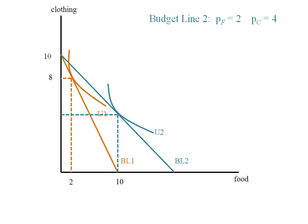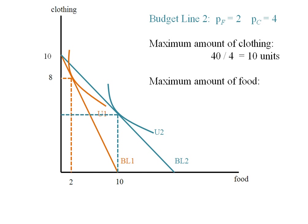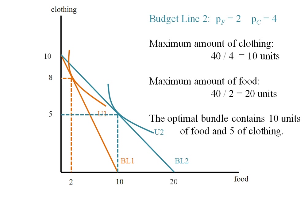Here we have budget line two. The price of food has fallen to two dollars and the price of clothing has stayed constant at four. So the maximum amount of clothing hasn't changed — we can still buy ten units — and the maximum amount of food has increased to forty divided by two, or twenty units. The dashed line ends at five, so the optimal bundle contains ten units of food and five units of clothing.